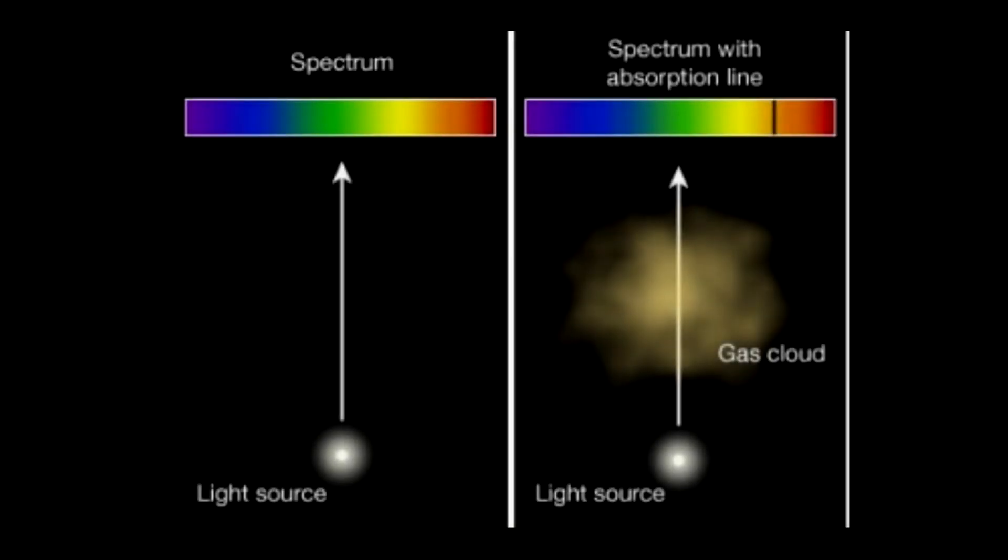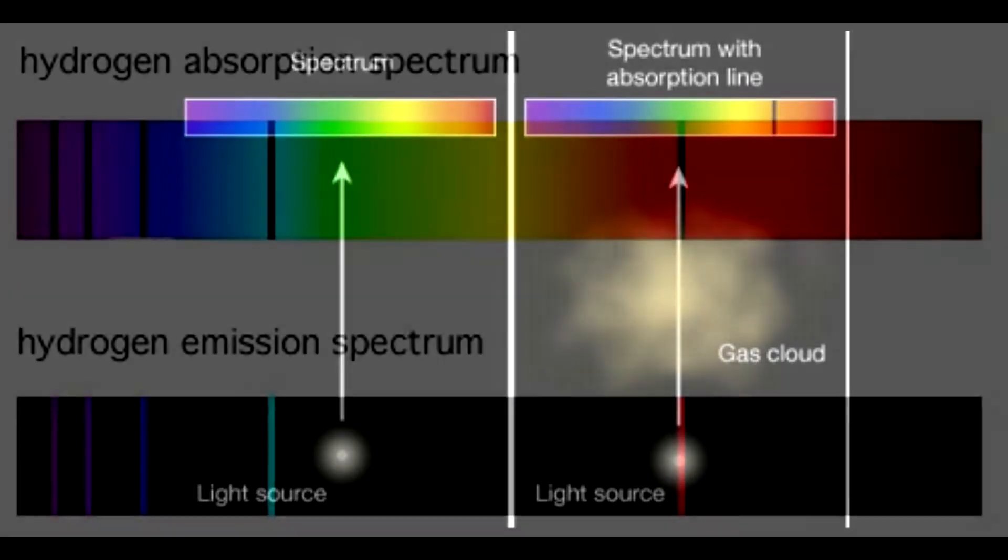For instance, if there was a cloud of hydrogen between a source of light and a spectrograph, the hydrogen will absorb its unique wavelength and will ignore the rest. The absorbed wavelengths of hydrogen would show up as black lines on the spectrograph.